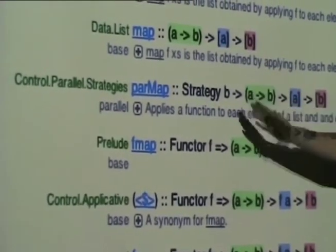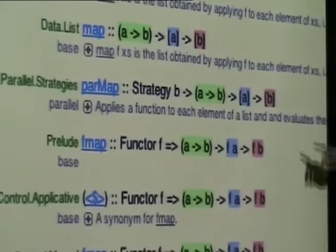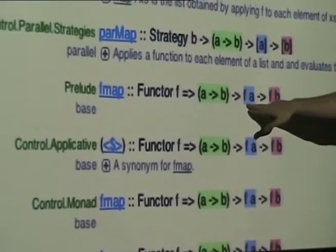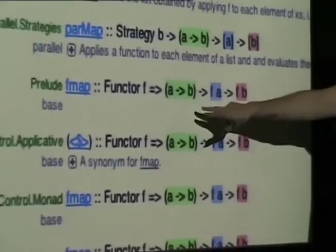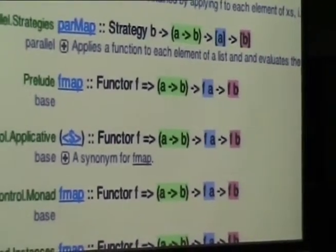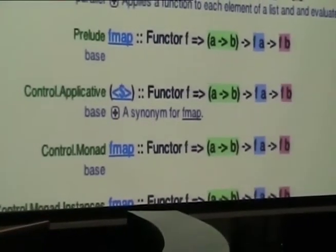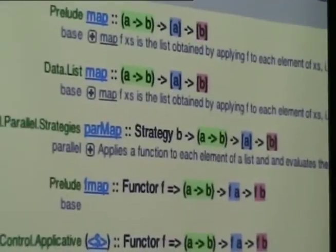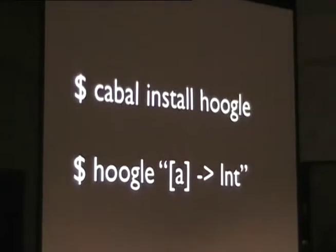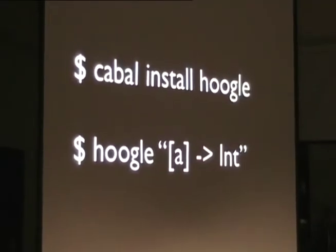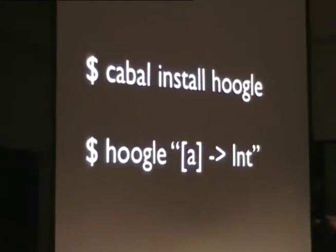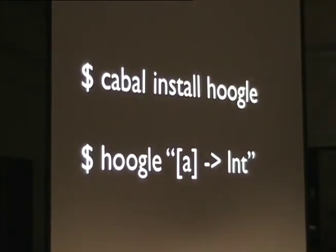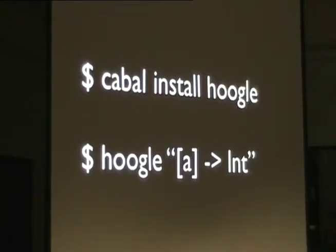Hoogle also gives alternatives where the type signature is similar but not quite the same — like `parMap` where you have to pass in a strategy first as an extra parameter. It also recognizes that a list of A's can be generalized to a higher-kinded Functor, giving us `Functor.fmap` — exactly the same operation but generalized. That's really useful for finding functions and discovering generalizations and abstractions. It's even better when you realize there's a command-line tool for Hoogle — you can change the database to include all your local packages.